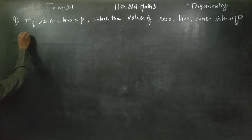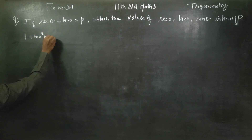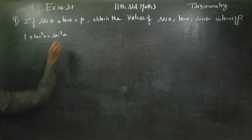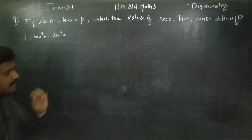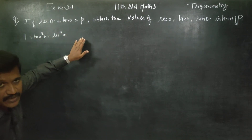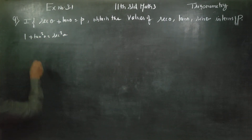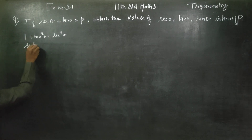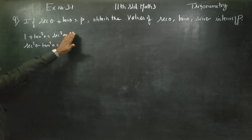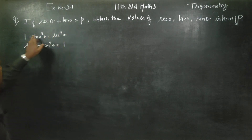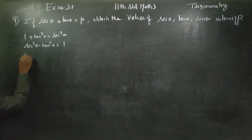We very well know that 1 plus tan squared theta is equal to secant squared theta. It is a ready-made formula from 10th standard — this is an identity. So rearranging, secant squared theta minus tan squared theta is equal to 1. This is a square minus b square formula.